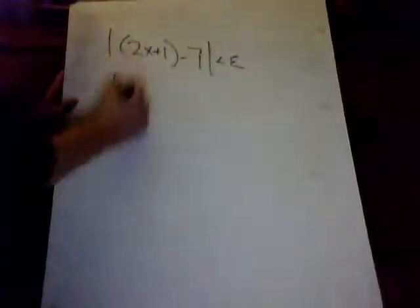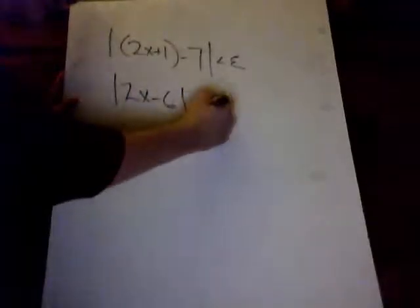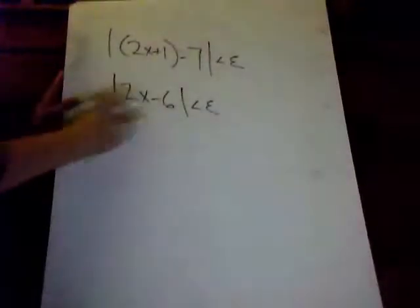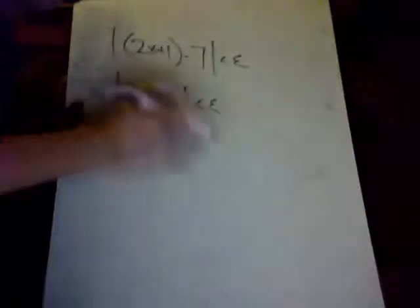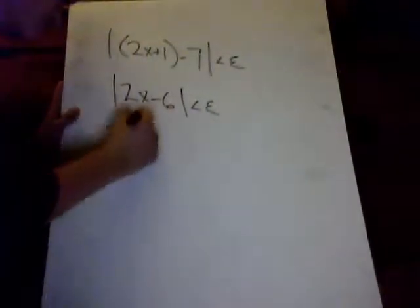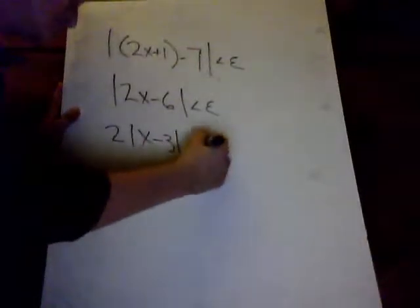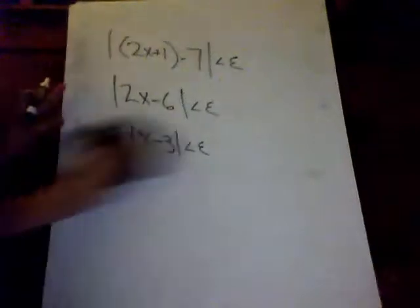This reduces to |2x - 6| less than epsilon, which you could factor out a 2 here. Why you can do that, I will explain in a little bit. Factor out a 2, you get |x - 3| less than epsilon. Running out of room here, so, we get |x - 3| is less than epsilon over 2.